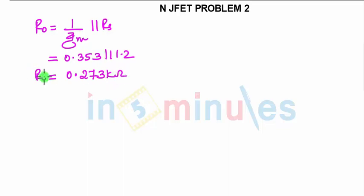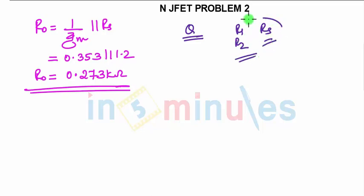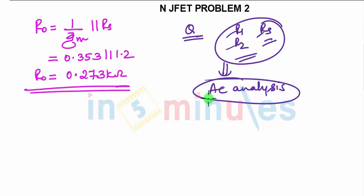This is how we need to solve the problem when it is asked to design and then solve the entire analysis. For designing, as we have seen, we need to find—they have given us the Q point—and we need to find the value of R1, R2, and RS. These values we have found out. Then using these values, we are doing the AC analysis. If you make any mistake in finding the values of these resistances, then the AC analysis might go wrong.